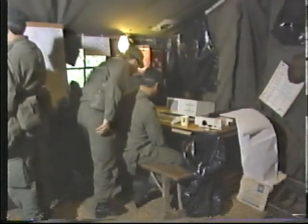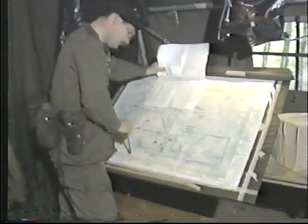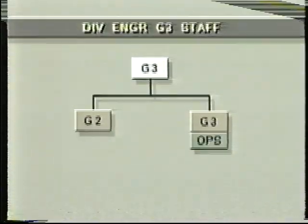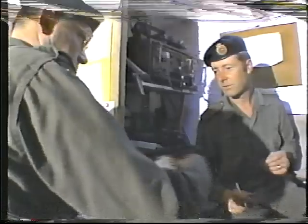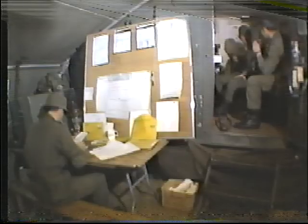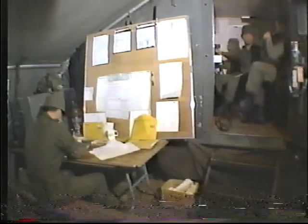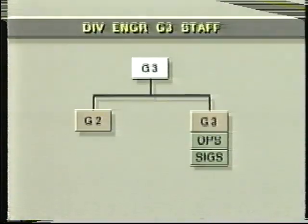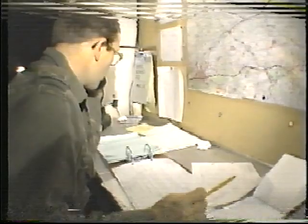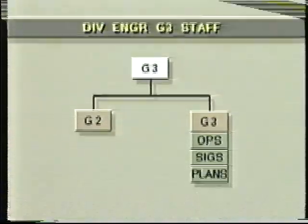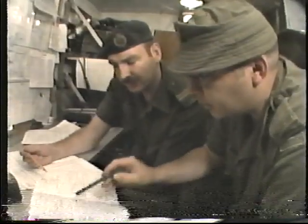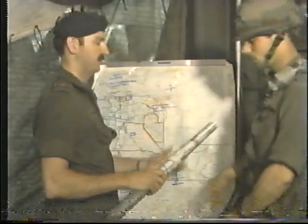The G3 is the principal operations staff officer. He directs and supervises the G2 and G3 staff, which completes the detailed work on engineer plans and orders and directs the production of engineer intelligence. Included in his staff are the G3 operations, who controls the engineer command net, keeps the battle map updated, maintains records, files, reports, and returns, and mans the step-up for the headquarters; G3 signals, who is responsible for all communications within the division engineer group; and the G3 plans, responsible for the preparation of plans, orders, and instructions, and a liaison section.